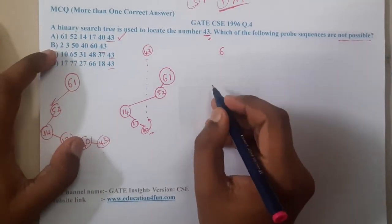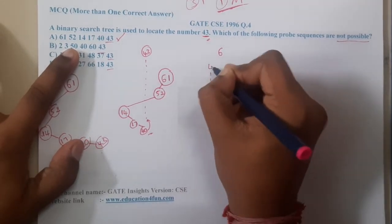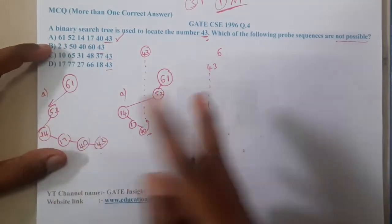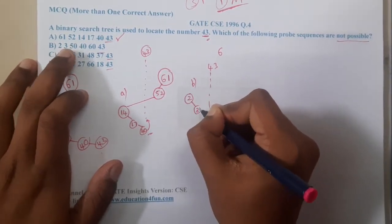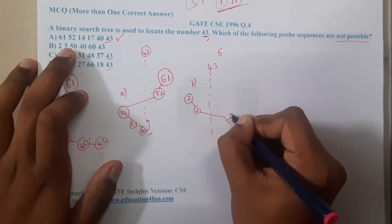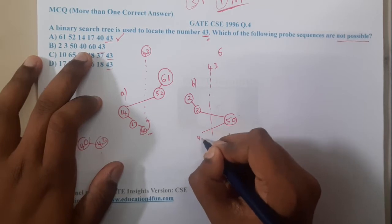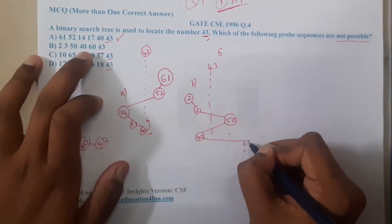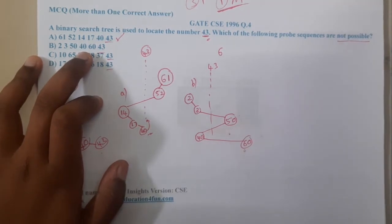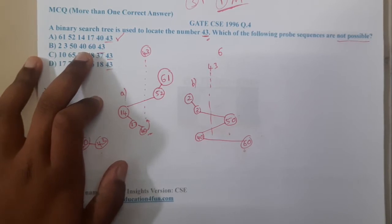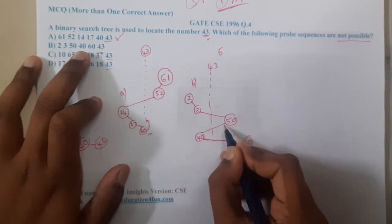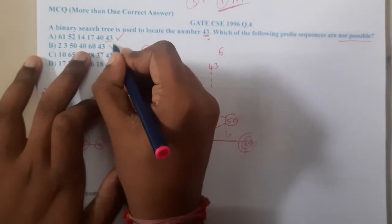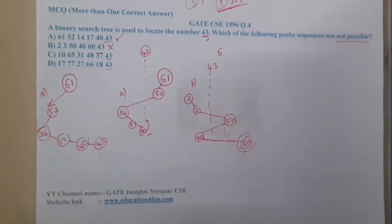Now let us take Option B. Starting at 2, then going to 3, then directly to 50 — that looks good. Then we came back to 40, and then went to 60. I think something is wrong here. Can we jump from 40 to 60? From 40, if you want to go right, you can go at max up to 49 only. How can you go to 60? I think this sequence is wrong.